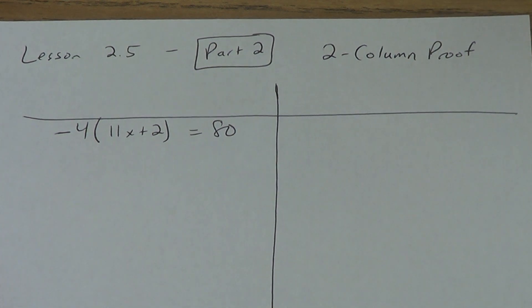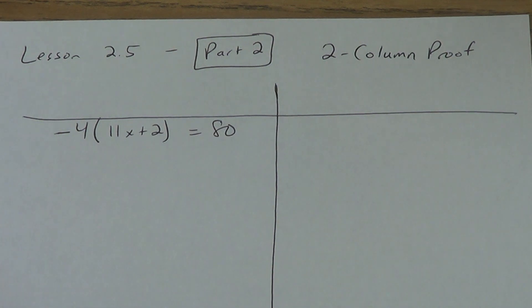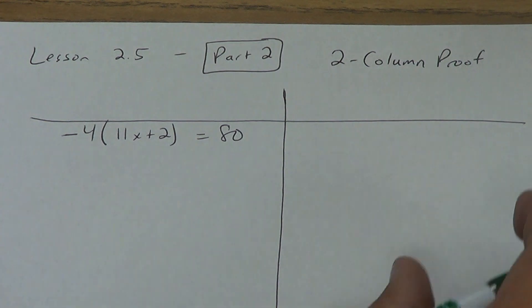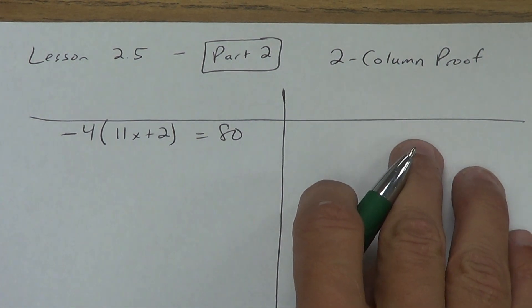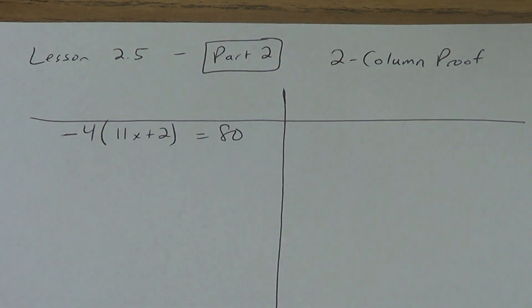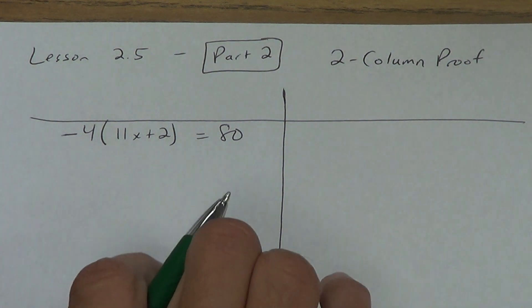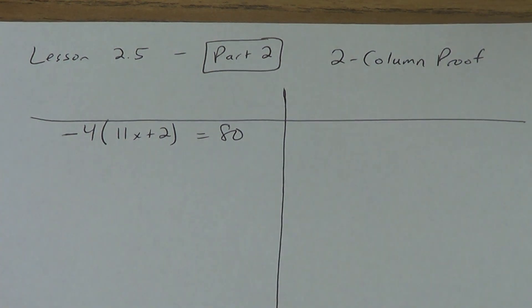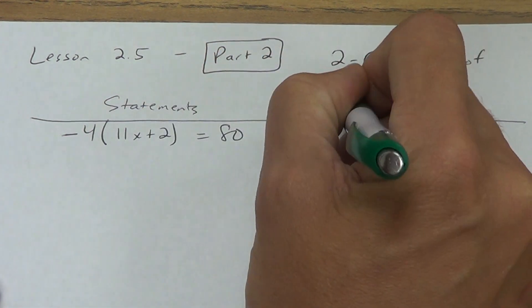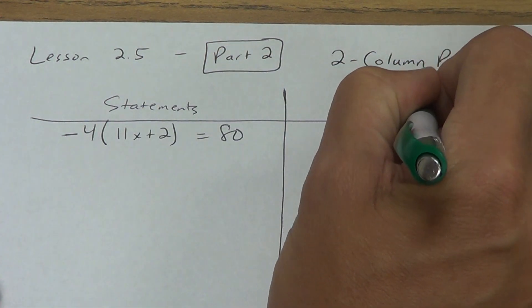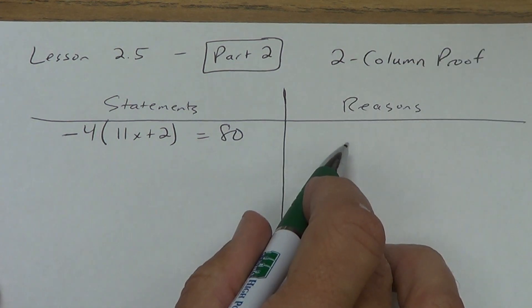These two-column proofs do get difficult, especially when you get away from the algebra side and into the geometry side. We're going to start with algebra because usually you know how to do the algebra. The left side won't be difficult. The right side, we're going to start to challenge you a little bit — you have to do some stuff you haven't done before in algebra class.